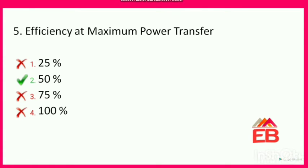Next: the efficiency at maximum power transfer is? Options are 25%, 50%, 75%, or 100%. As per the maximum power transfer theorem, whenever the load resistance equals the source resistance, maximum power transfer occurs. Here they are asking for the efficiency of the network, not the power. The correct option is 50% — option 2 is correct.